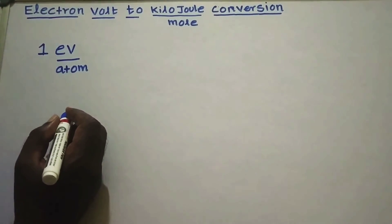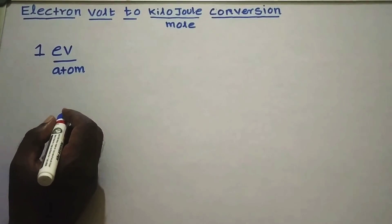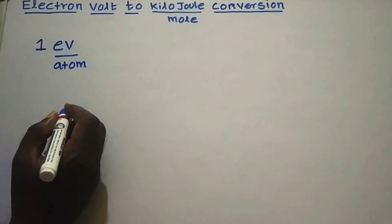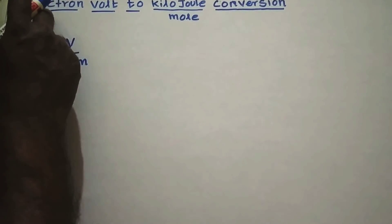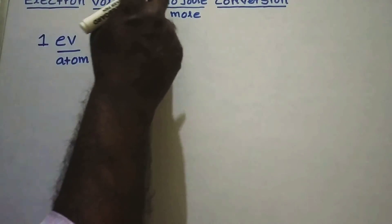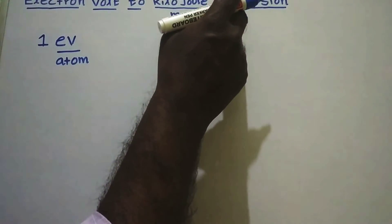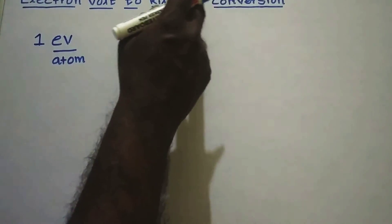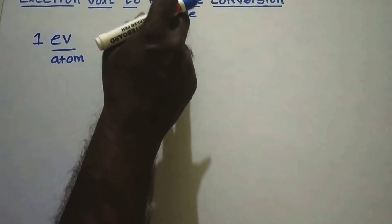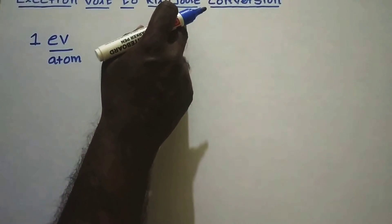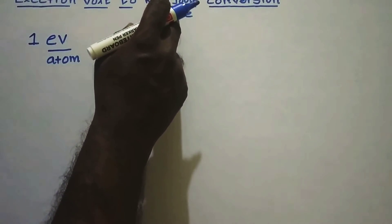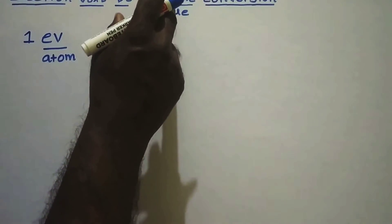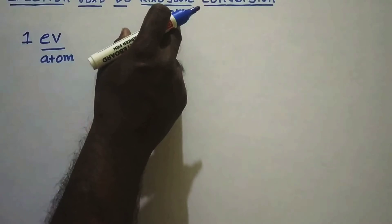Good morning students. Today we are going to discuss an important conversion method in chemistry: electron volt to kilojoule per mole conversion. This is the most important conversion, frequently asked when doing sums in atomic chemistry, atomic physics, nuclear chemistry, and nuclear physics.